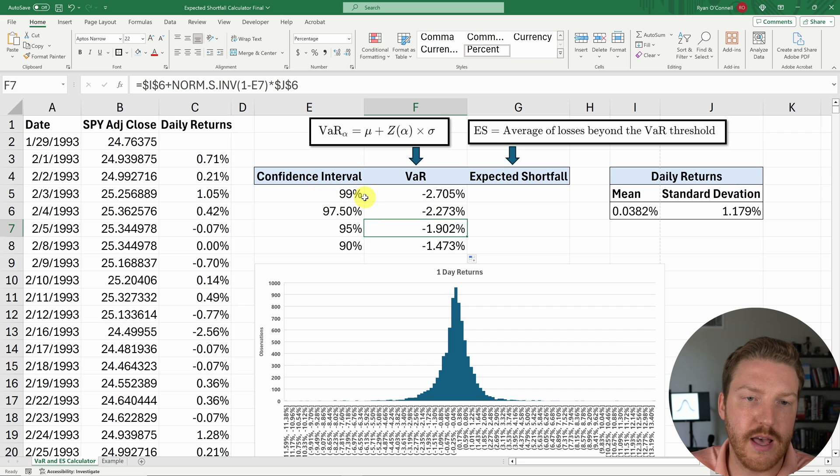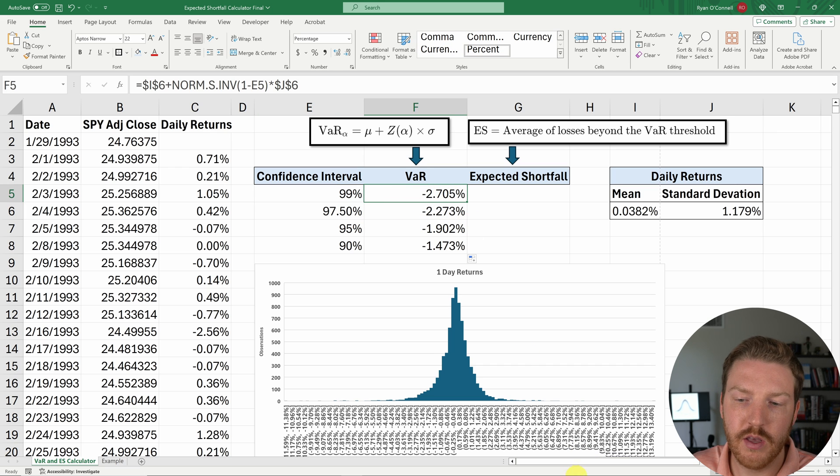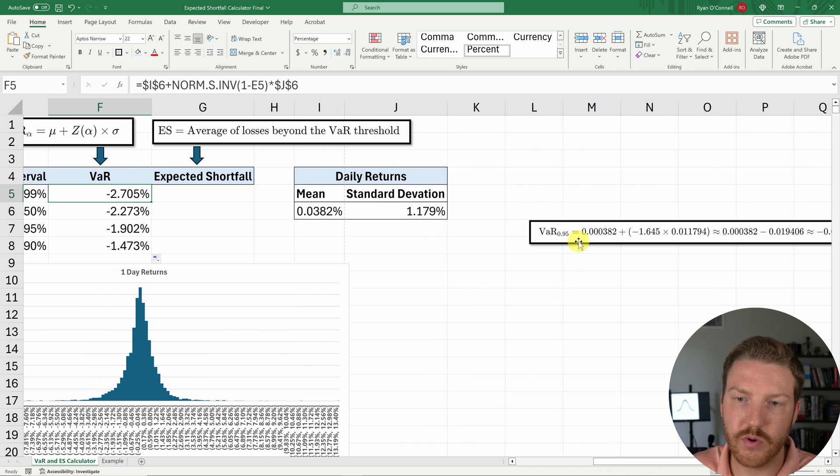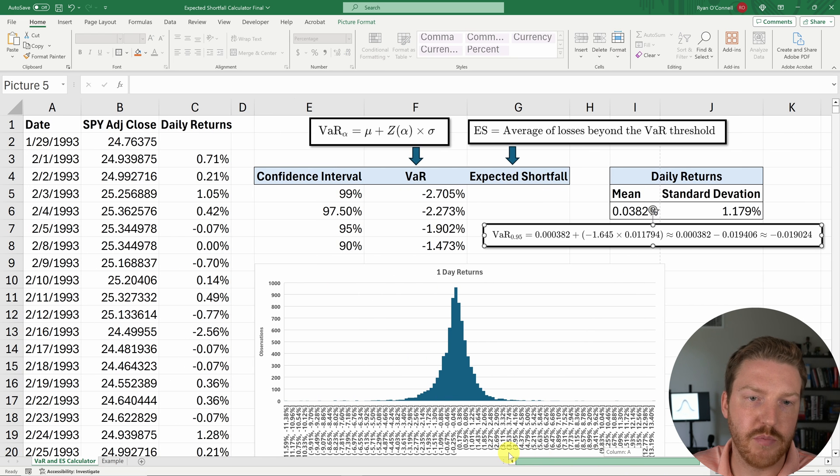So one thing you'll notice is that the higher the confidence interval, the further we're going out into the tail, which means the more negative the VaR value should be. I wanted to show you one example really quick. So the 95th percentile VaR is going to follow this formula, which is just equal to the mean plus the Z score.